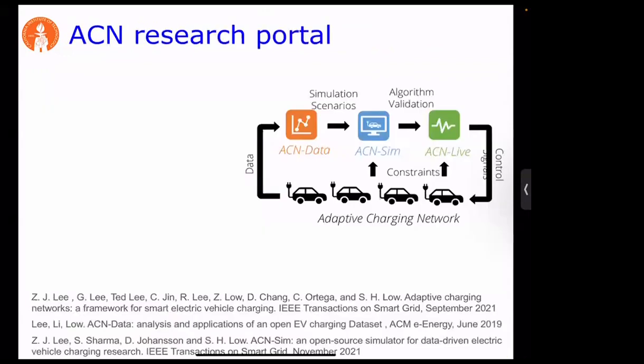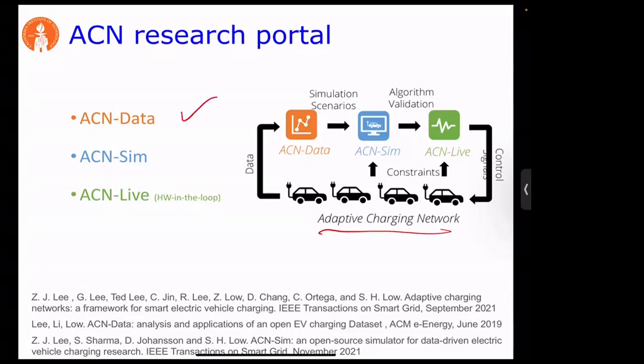Before November 2018 the system was a test bed; after that it transitioned to commercial operation, so we could no longer freely experiment. The idea was to build a software layer on top of the physical layer to provide three things useful for research: ACN Data, a simulator, and ACN Live (though ACN Live is not yet complete).